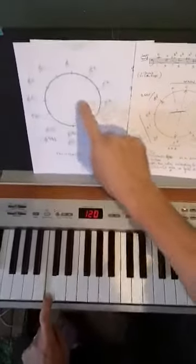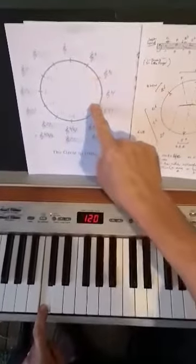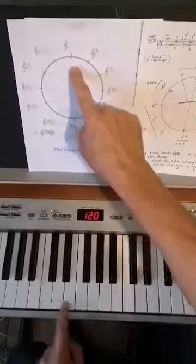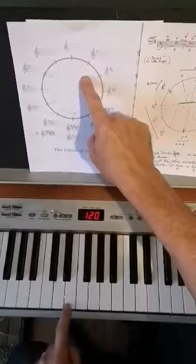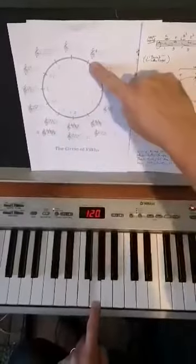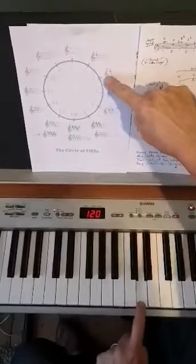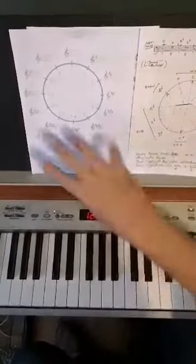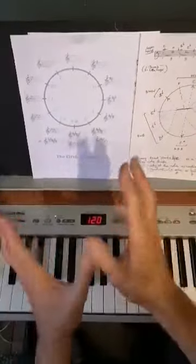And here they are arranged so that they are a fifth away from each other going up. So from C to G is five notes: one, two, three, four, five. From G to D is five notes: one, two, three, four, five, and so on. So that is a thing. We're going to come back to that.